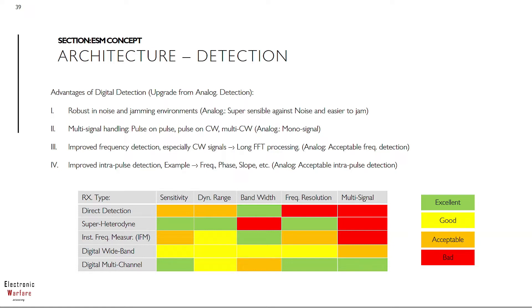So firstly, digital receivers are quite robust against noise and jamming environments. So when it comes to analog domain, this is super sensitive and therefore easy to jam or saturate, making the equipment useless in an operating mission. Secondly, we have multi-signal handling, for example pulse on pulse on pulse on continuous wave, multi-CW, thanks to basically the fact of digitalizing and the interleaving. Analog domain is basically limited to mono signal.